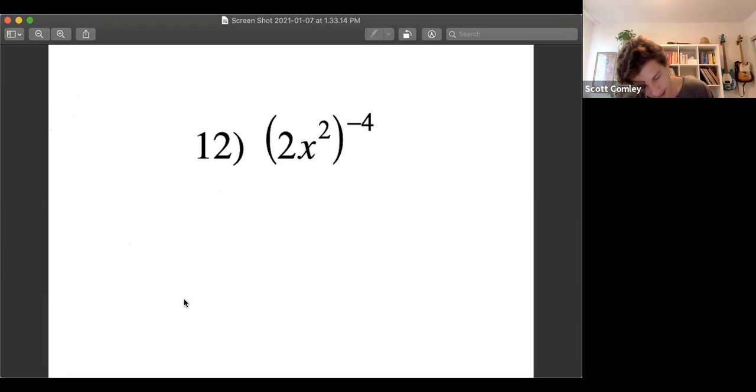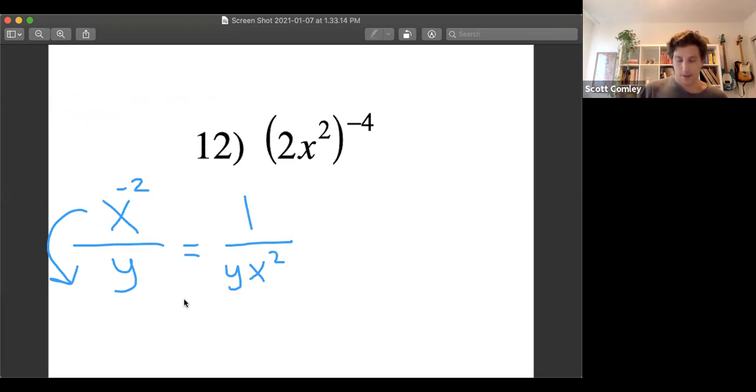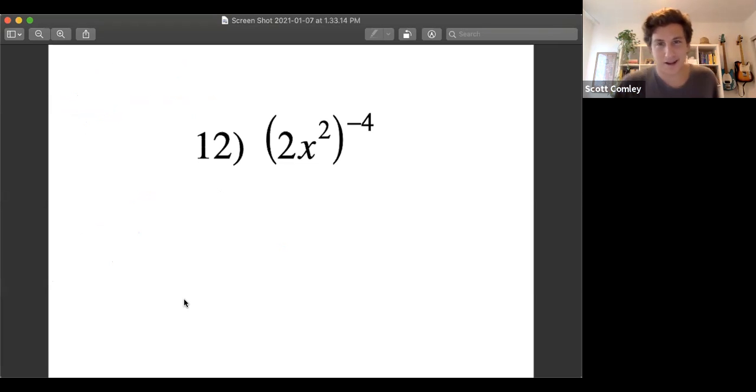No, unfortunately not. The only thing that happens if it's x to the negative two over y, only the x goes to the bottom. So anything that's left on top is just one and it would be y times x to the two.